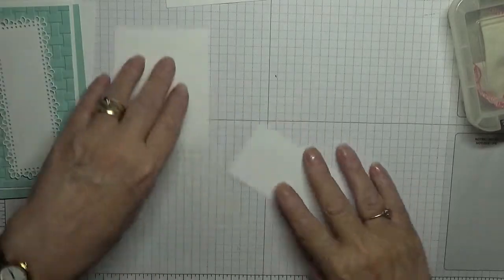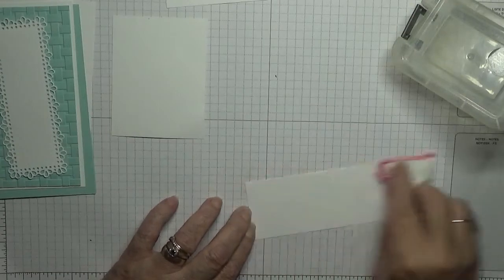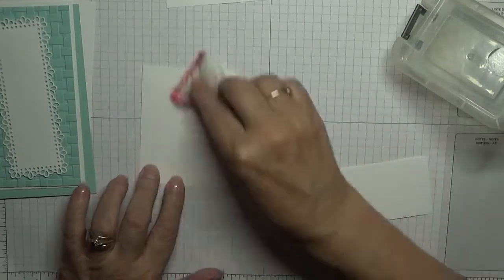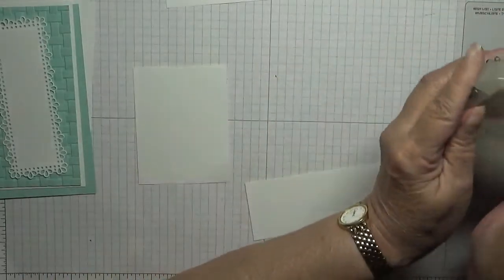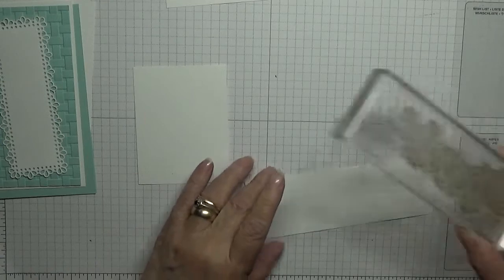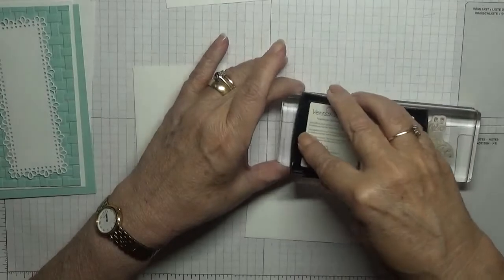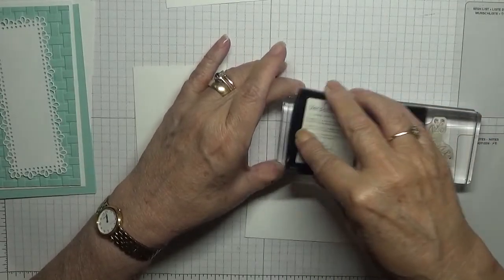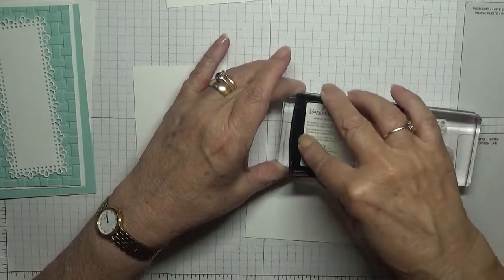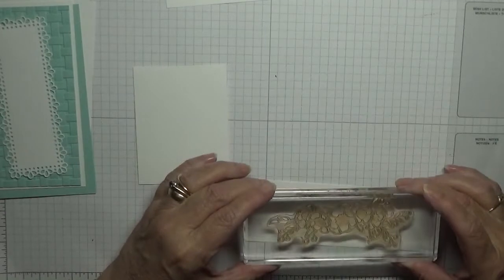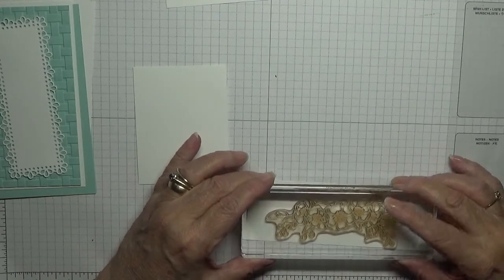To get started we're gonna stamp the flower first. So we'll put the embossing buddy on. Bring out my flower and my Versafine, ink it up really good, and stamp that down there, making sure I'm on that piece of paper.